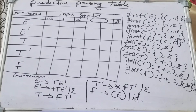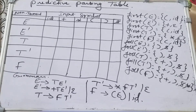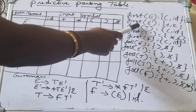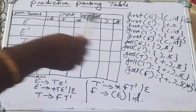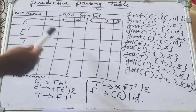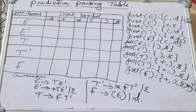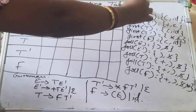Welcome to my channel, this is Vijay Rashmi. This is a continuation video of my previous video, where I explained how to compute the FIRST and FOLLOW. After identifying FIRST and FOLLOW, next we have to construct the predictive parsing table, also called the LL(1) parser.